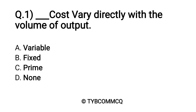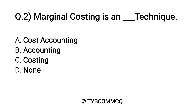Question number one: dash dash cost vary directly with the volume of output. Option A: variable, Option B: fixed, Option C: prime, and Option D: none. Yes, the correct option is Option A — variable.